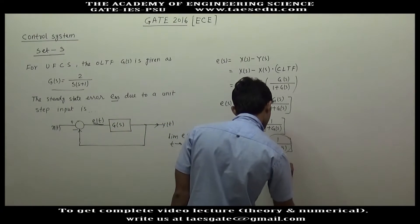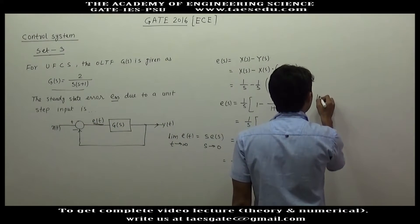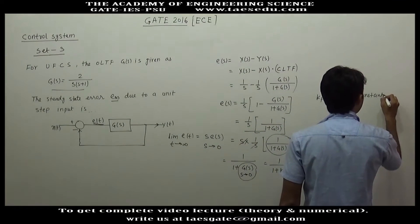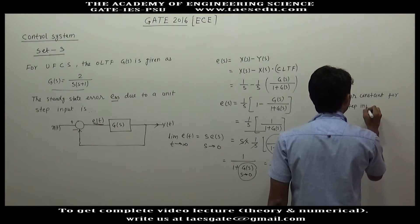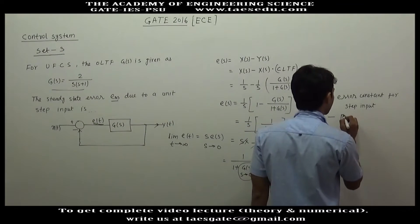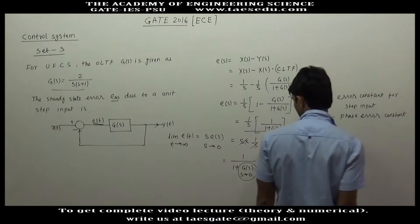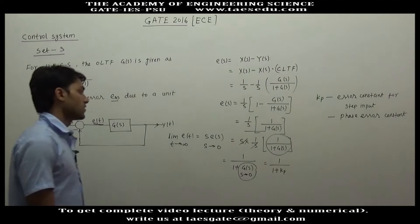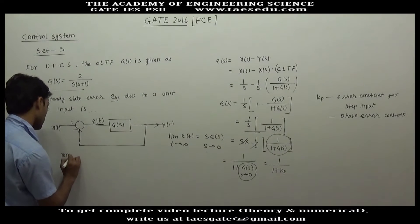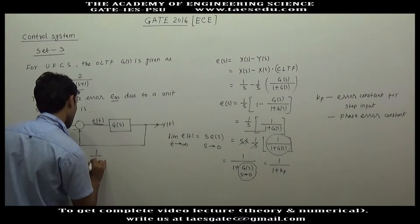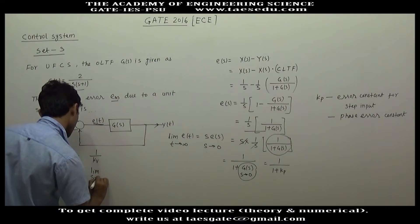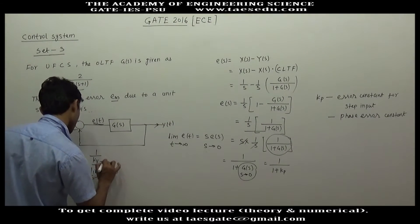This quantity is called Kp, the position error constant — the error constant for step input. For a unit step, the steady-state error is 1/(1 plus Kp). Similarly, for a ramp input the error is 1/Kv, where Kv equals the limit as s tends to 0 of s·G(s). Kv is called the velocity error constant.